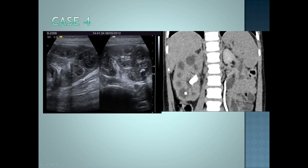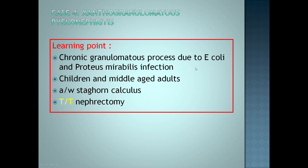This is the fourth case where we see that the kidney is enlarged on ultrasound images and the calyces are dilated with hypoechoic exudates present within the enlarged calyces. The coronal CT images show how the right kidney is markedly enlarged compared to the left. There is a staghorn calculus and the dilated calyces are filled with hyperdense soft tissue-attenuating lesions. Diagnosis is xanthogranulomatous pyelonephritis — a chronic granulomatous process due to E. coli and Proteus mirabilis infection affecting children and middle-aged adults. It is associated with staghorn calculus and is treated with nephrectomy.